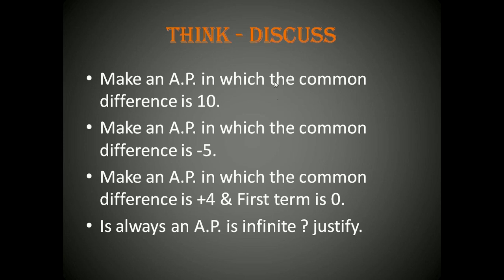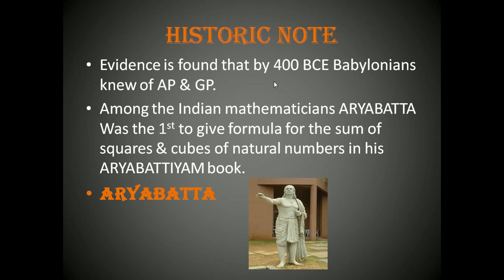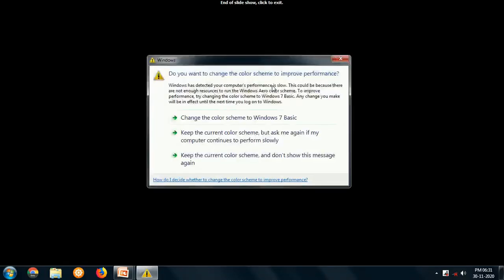Let us see a historic note. Evidence shows that by 400 BCE, Babylonians already knew about Arithmetic Progression and Geometric Progression. Among Indian mathematicians, Aryabhatta was the first person to give the formula for the sum of squares and cubes of natural numbers, covered in upcoming videos. You can see Aryabhatta's picture in your 10th class Mathematics textbook. That is all for today — thank you for watching.